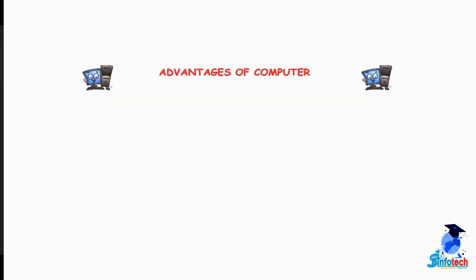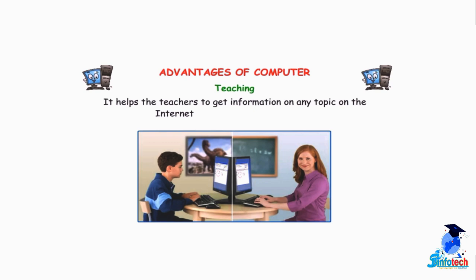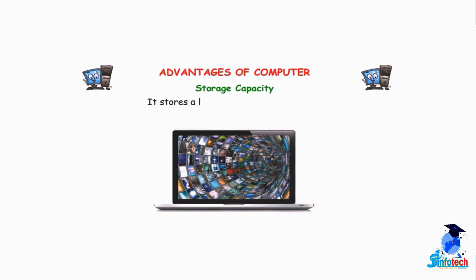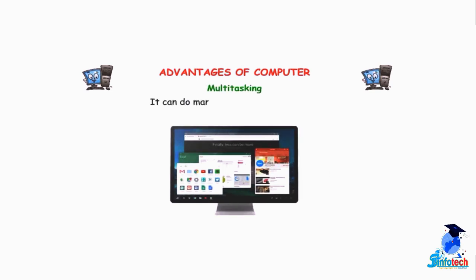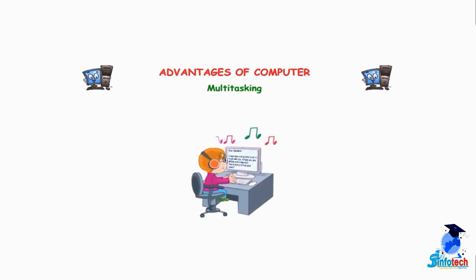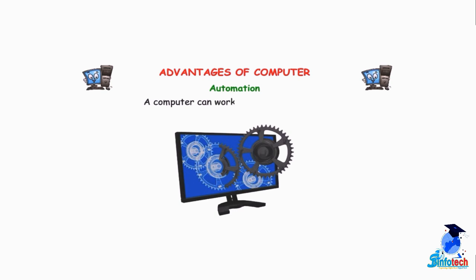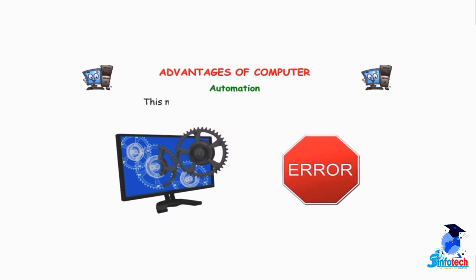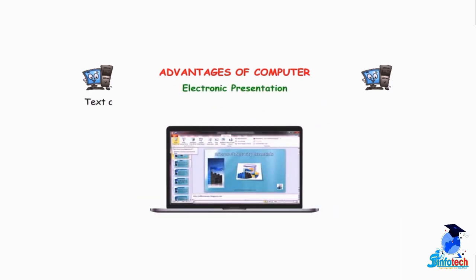What are the advantages of a computer? Teaching — it helps teachers get information on any topic on the internet and present it nicely. Storage capacity — it stores a large amount of information. Multi-tasking — it can do many tasks at the same time. For example, you can listen to music while typing a letter. Automation — a computer can work in an automatic way, making our work less prone to errors. Electronic Presentation — text and pictures can be presented in a beautiful way and edited whenever needed.